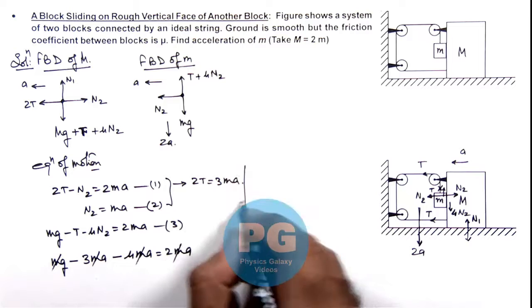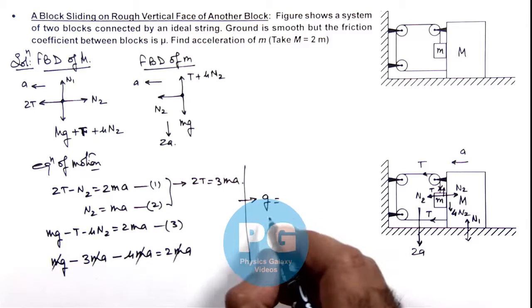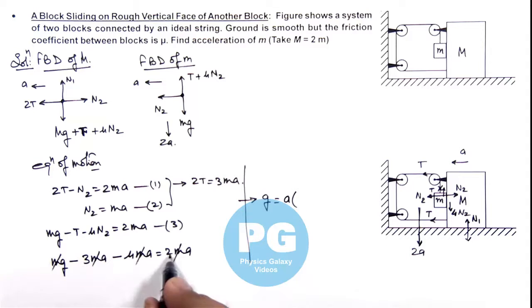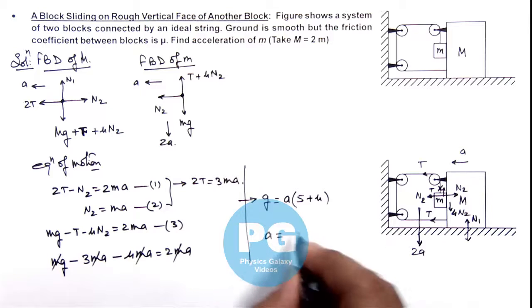And if we continue here, this will give us g on one side and on right hand side we are having acceleration and this will be 3 plus 2, 5 plus mu. So on simplifying we are getting the acceleration as g by 5 plus mu.